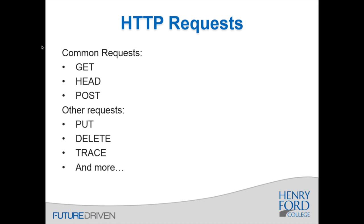The HEAD request is handy when you want to check a large file — you can compare the header to a previous GET request, and if it hasn't changed, you know you don't need the full data. A POST request is a way to send data to the server — you send a data object as part of the request. There are other request types too: PUT, DELETE, TRACE, and a handful others. Those first three — GET, HEAD, and POST — were the only ones supported in HTTP 1.0. All other request types were added in HTTP 1.1.